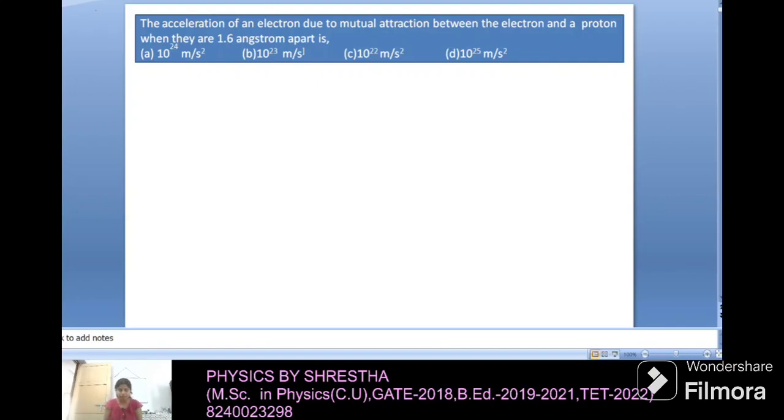Today I am going to solve a numerical problem on the topic of electrostatics from GATE 2020. The problem is: the acceleration of an electron due to mutual interaction between the electron and the proton when they are 1.6 angstrom apart.